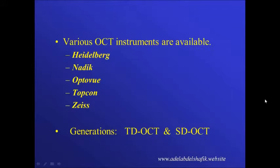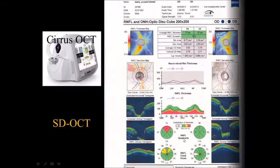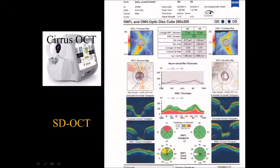We have different types of machines coming from different companies, and also different generations of OCT — the time domain and the spectral domain. I'm going to restrict most of my talk to the spectral domain OCT of the Zeiss company, the Cirrus OCT. This is the shape of the printout we receive.